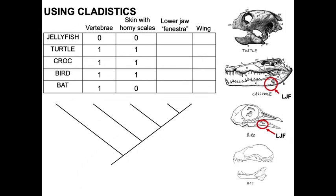LJF stands for lower jaw fenestra. Jellyfish don't have this feature, so they would get coded a zero. Turtles also have no lower jaw fenestra — the turtle lower jaw has no holes in that bone, so it would get a character state of zero. Also in bats, we don't have a lower jaw fenestra. Looking at the first feature, vertebrae, we know all these groups are vertebrates and will group together based on that feature.